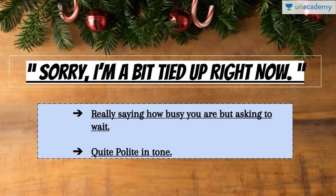The next phrase is: sorry, I am a bit tied up right now. It's a very nice phrase and it is formal — you could use it in a formal conversation. You actually want to say that you're really busy, but you will still help them. You're not declining the request; you will help them later because you're busy right now. You say 'sorry,' pause for a nanosecond, and then say 'I am a bit tied up right now.'